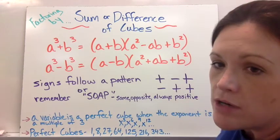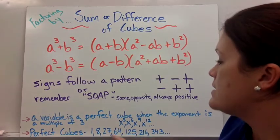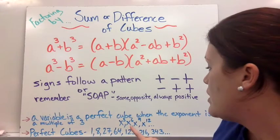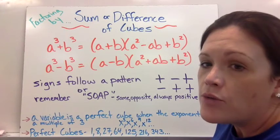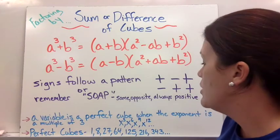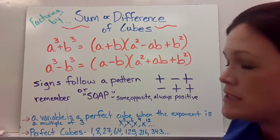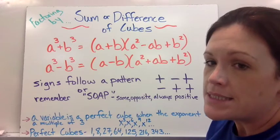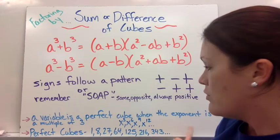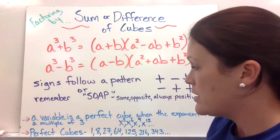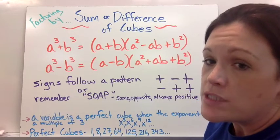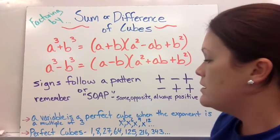Another thing to make a note of is a variable that has an exponent higher than 3, how to recognize if that's a perfect cube. It's a perfect cube when the exponent is divisible by 3. So like 3, 6, 9, 12. I don't know if they get bigger than that, but they could. So we just look at whether or not it's a multiple of 3 or it's divisible by 3.